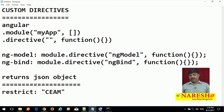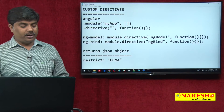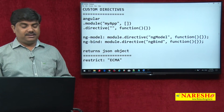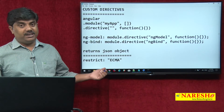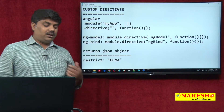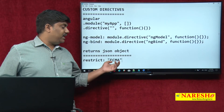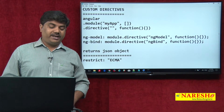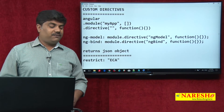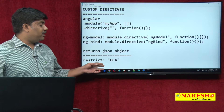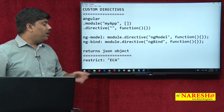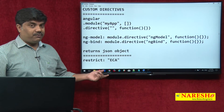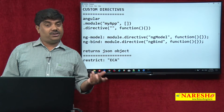You can memorize it easily as ECMA. E stands for element, C stands for class, M stands for comment, A stands for attribute. Most of the times we will use E, C, or A, but it is not a good option to create a directive as comment. This is the first property where we provide information about how the directive can be utilized. You can put all together, any one, or a combination — that is your choice.